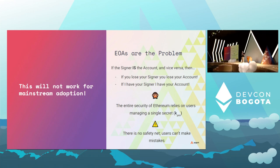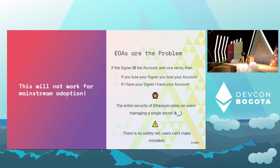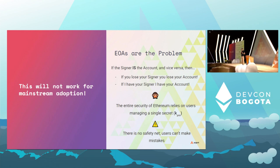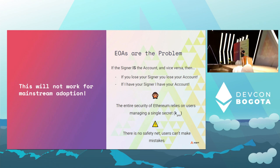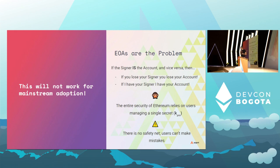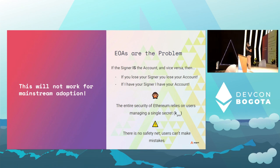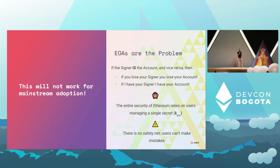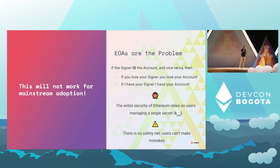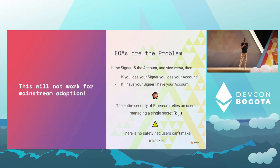On Ethereum the entire security relies on users managing a secret — this private key, this signer — at all cost. As a user you cannot make a mistake; if you make a mistake you lose everything. And if there's one thing we've learned from 40 years of the internet, it's that we humans suck at managing passwords and we make mistakes. This paradigm will never work for mainstream users.